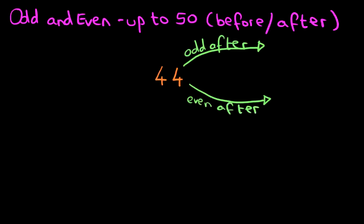You will see something like this in workbooks as well. So let's work through this. We've got 44. We want to work out what is the odd number after 44. We're doing after, so let's count forwards. The number after 44 is 45. So is 45 an odd number or an even number? Let's write it down. Ignore the 4 — the 4 is irrelevant. We're concentrating on the 5.